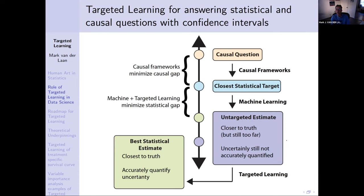On the other hand, there might be a causal gap — some violation — and you might say: I don't trust it at all, it's too far from reality. Maybe you have to collect a better experiment or satisfy yourself with less ambitious questions. But at some point you say: yes, this is the estimand I want to go for; I believe the causal gap is not too big. And so the statistical estimation problem starts.